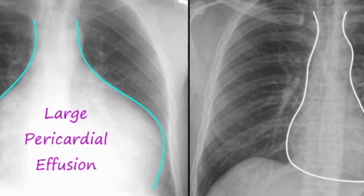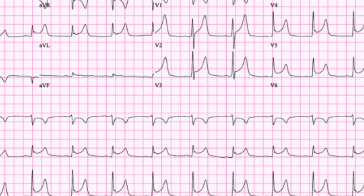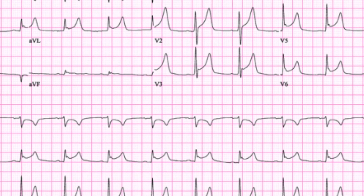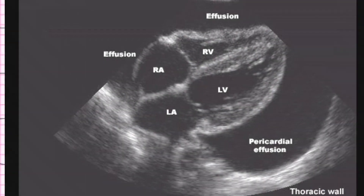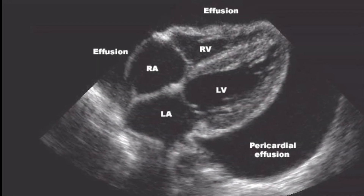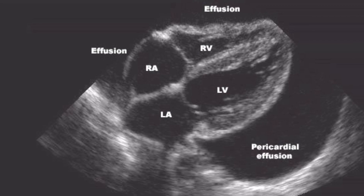An electrocardiogram is done to look for changes in your heart rhythm, and an echocardiogram is used to see how well your heart is working and check for fluid around your heart.